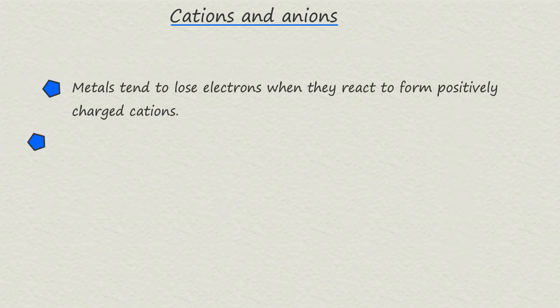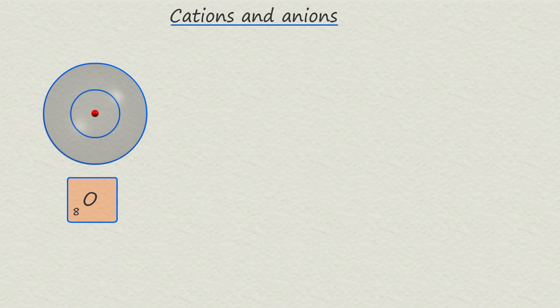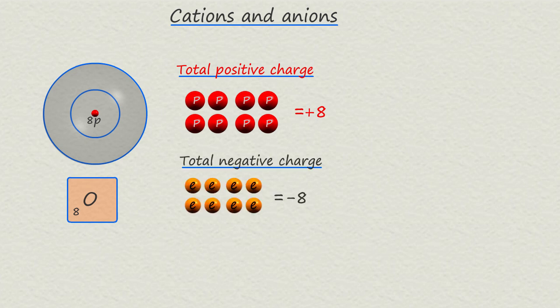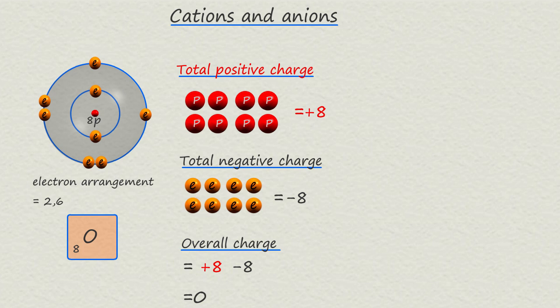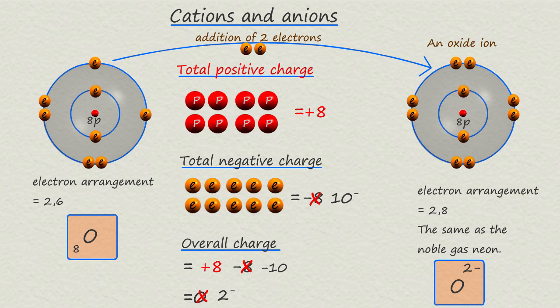When non-metal elements react, unlike metals they tend to gain electrons. Consider the non-metal oxygen, which has an atomic number of eight and therefore eight positively charged protons in its nucleus and eight negatively charged electrons in its shells, arranged as two in the first shell and six in the second. To gain a full outer shell, each oxygen atom needs to gain two electrons, usually from a metal atom. When it does, it will have two more negatively charged electrons than protons, giving it a charge of two minus. These negatively charged ions are called anions.